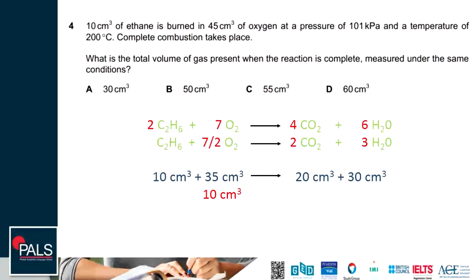The ethane is burned in 45 cm³ of oxygen, therefore there will be 10 cm³ leftover of oxygen because we used 35 but we have 45. The volume of gas in total will be 10 plus 20 plus 30, which is 60 cm³.